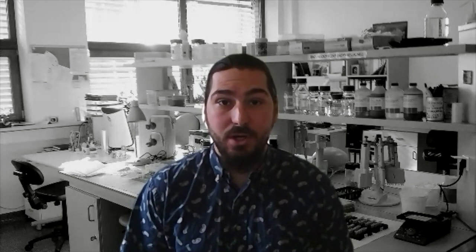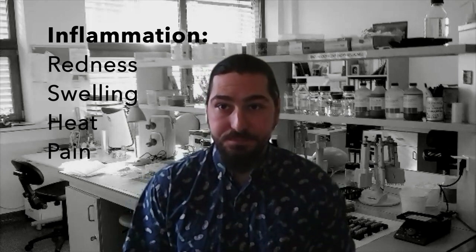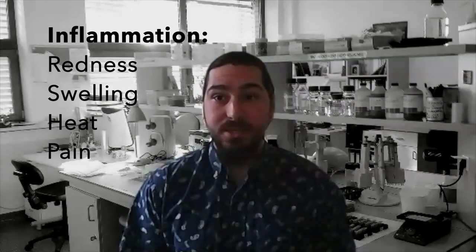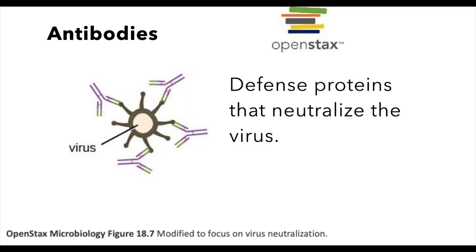Inflammation, antibodies, and white blood cells are the major tools that the immune system will use to defend against this infection. You may be familiar with the major signs of inflammation, which are redness, swelling, heat, and pain. Inflammation occurs when the immune system recognizes an infection. Although it can make us uncomfortable, inflammation is the body's way of sending in white blood cells and antibodies to stop the virus. Antibodies are proteins produced by a specific type of white blood cell known as a B cell. Antibodies defend against the coronavirus by binding to the spike protein, neutralizing the virus and blocking the spike protein so that the virus cannot enter our cells.